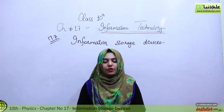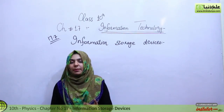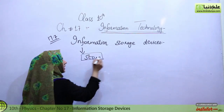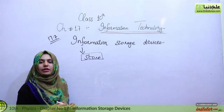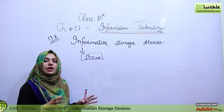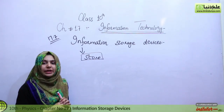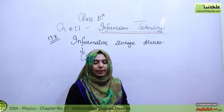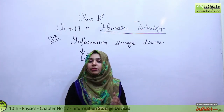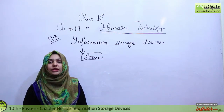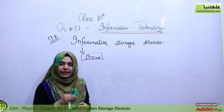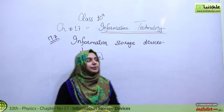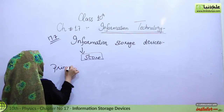Topic 17.7 is information storage devices. From the name, we understand that any information we want to store — we want it stored permanently. We discuss devices used for this purpose. Some devices are built inside the computer and store memory, while others are attached externally. We have two types of memory: primary memory and secondary memory.